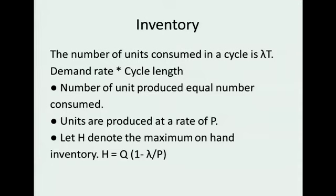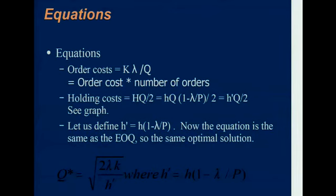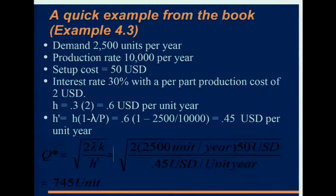We can say that each cycle we produce Q items. What we need to do is modify our holding cost to account for this. You can show that the holding cost, the new holding cost, is Q times 1 minus lambda over P. To do this, we have an order cost of K lambda over Q. Our holding cost now is HQ times 1 minus lambda over P over 2. Or as the book likes to put it, H prime, which is you just adjust your holding cost as holding cost times 1 minus lambda over P. Now you can compute a new Q star, which is 2K lambda over H, where H now is H prime, which is H times 1 minus lambda over P.